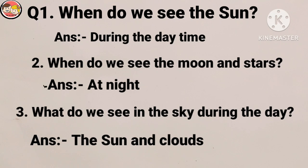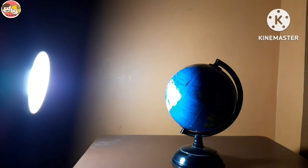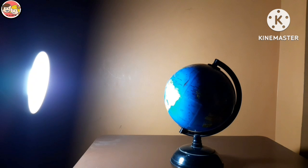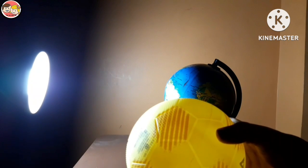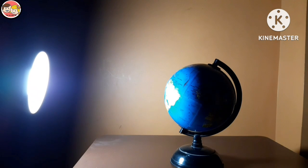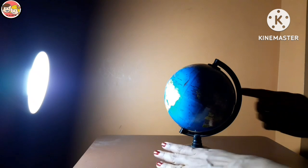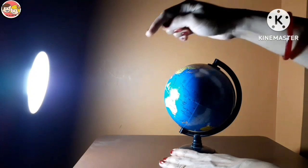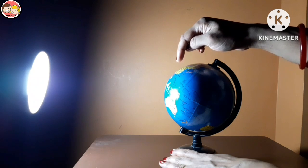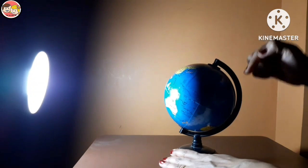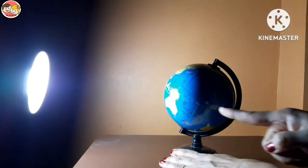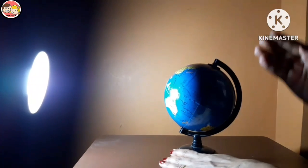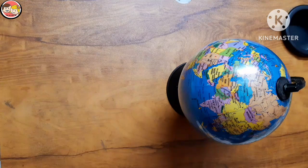Now moving on to the fun activity. For this activity I have taken a lamp and a globe. If you don't have a globe, you can use a ball. Here, the lamp represents the sun. Let's rotate the earth on its axis. Children, observe very carefully — where the light is falling. The half part of the earth that receives the sun's light is day, and the opposite portion away from the sun is dark, so it is night. This is day and this is night!